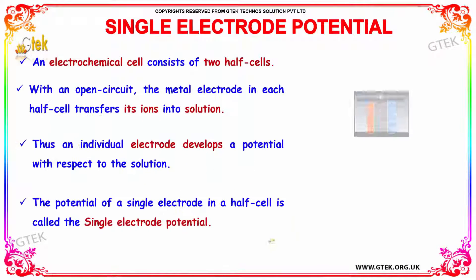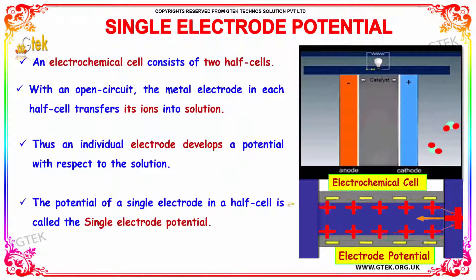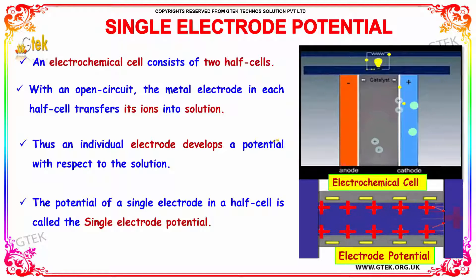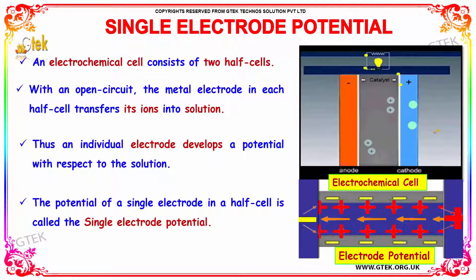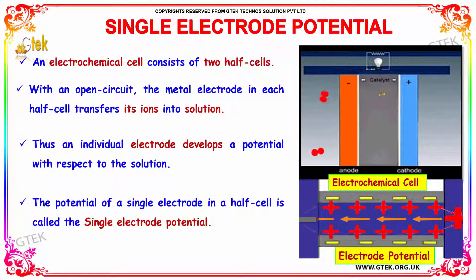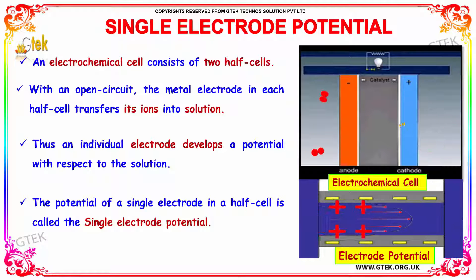In general, an electrochemical cell consists of two half cells. With an open circuit, the metal electrode in each half cell transfers its ions into solution, as you can see here. Thus, an individual electrode develops a potential with respect to the solution. The potential of a single electrode in a half cell is called the single electrode potential.